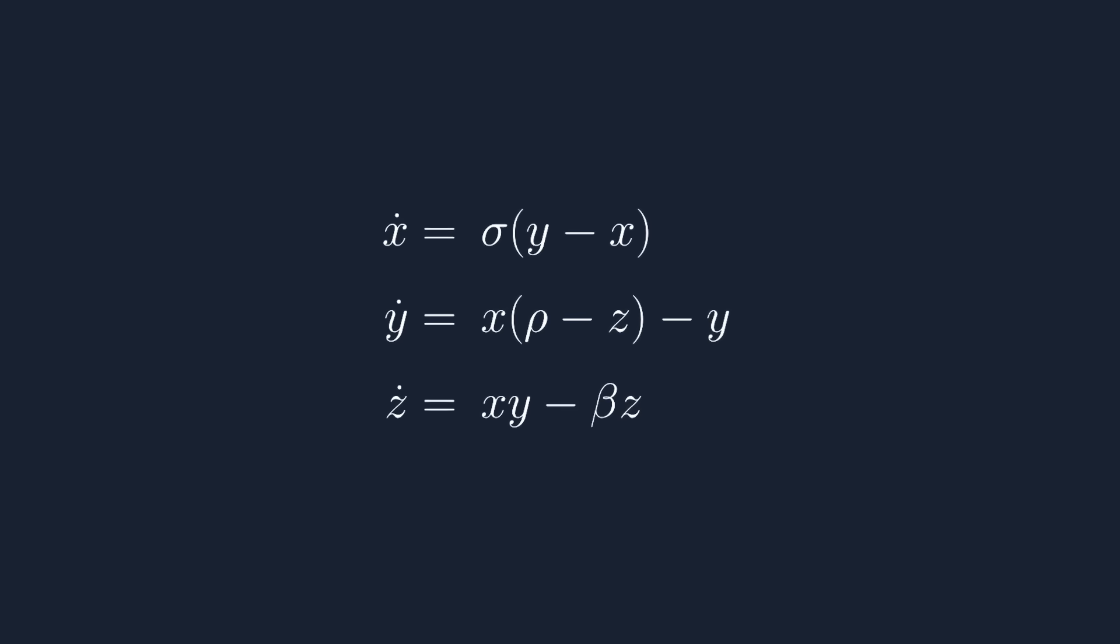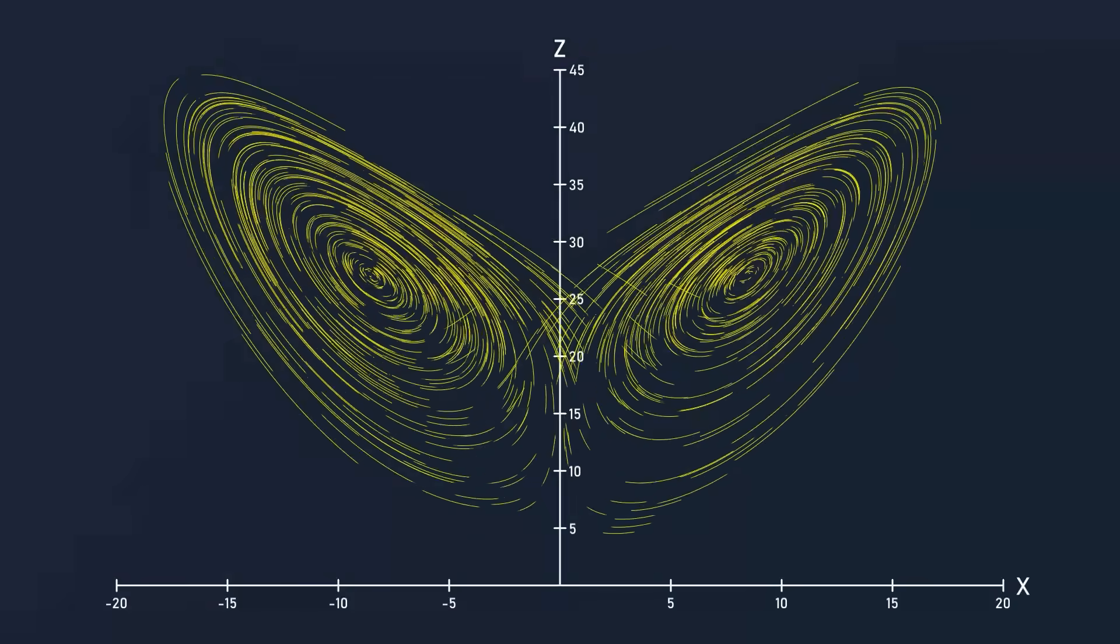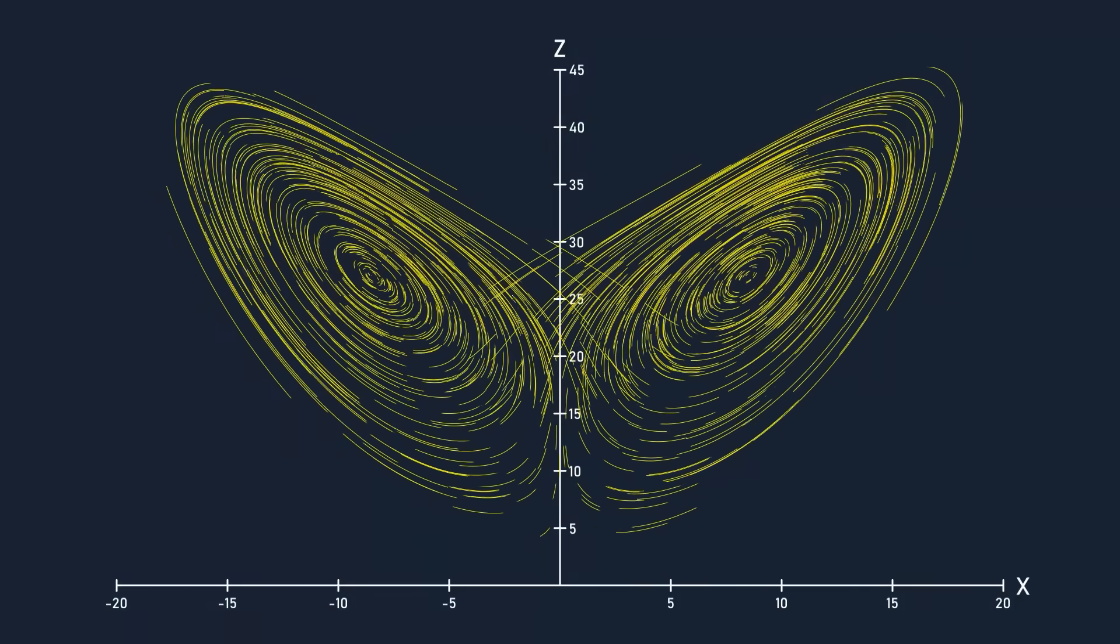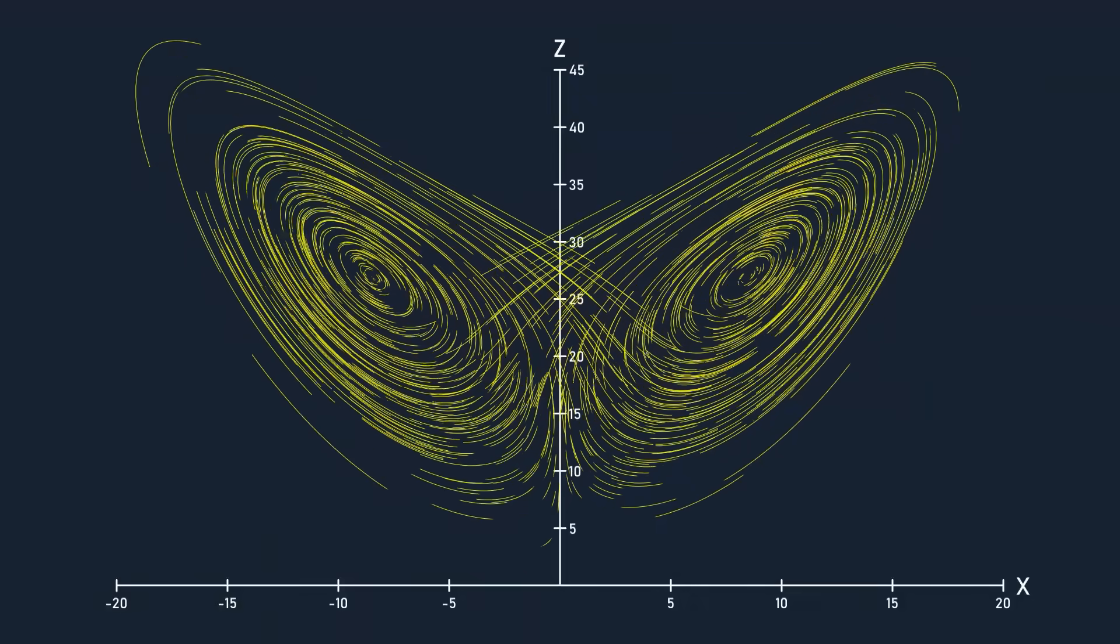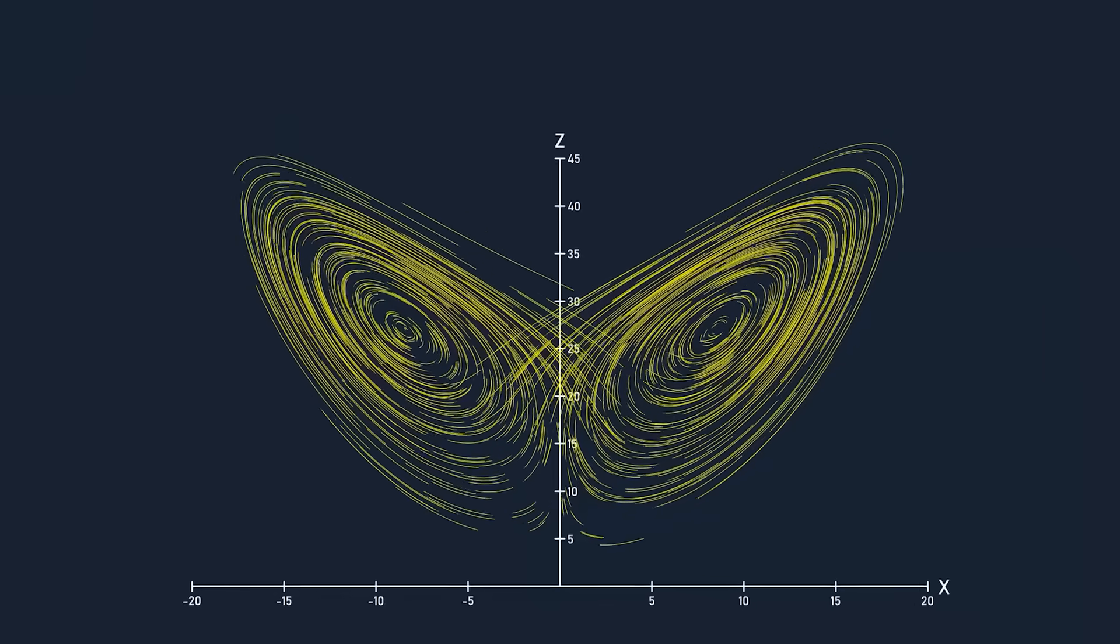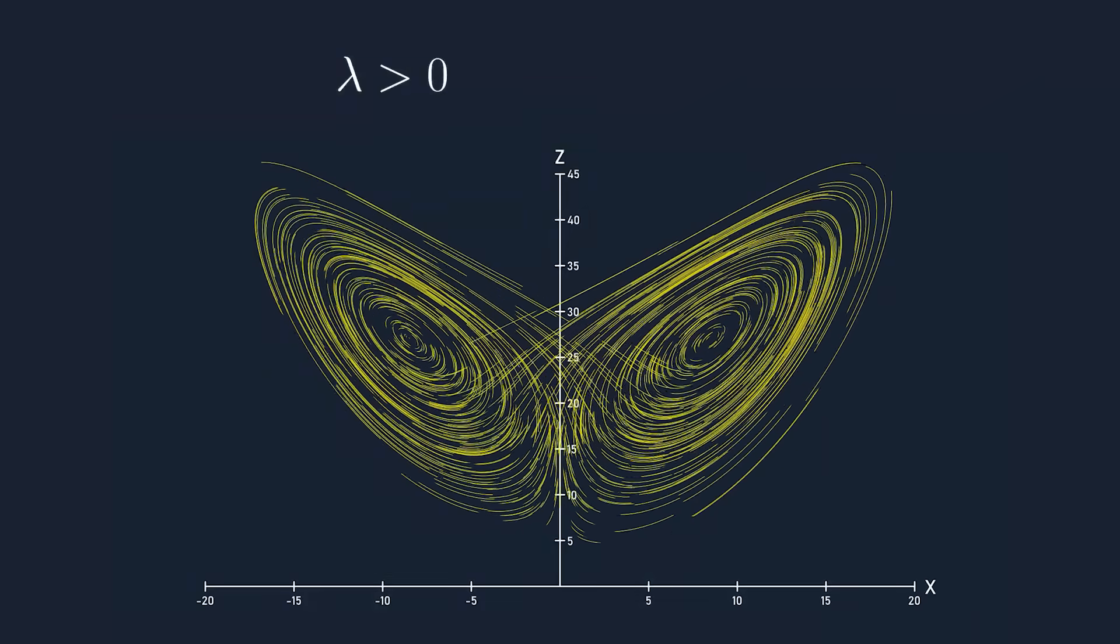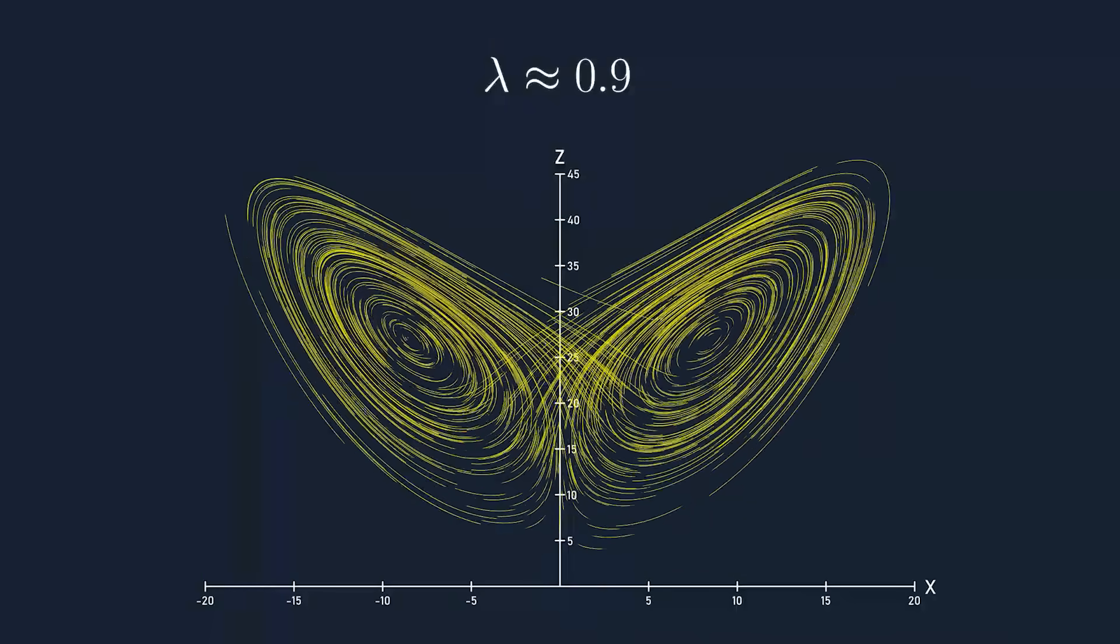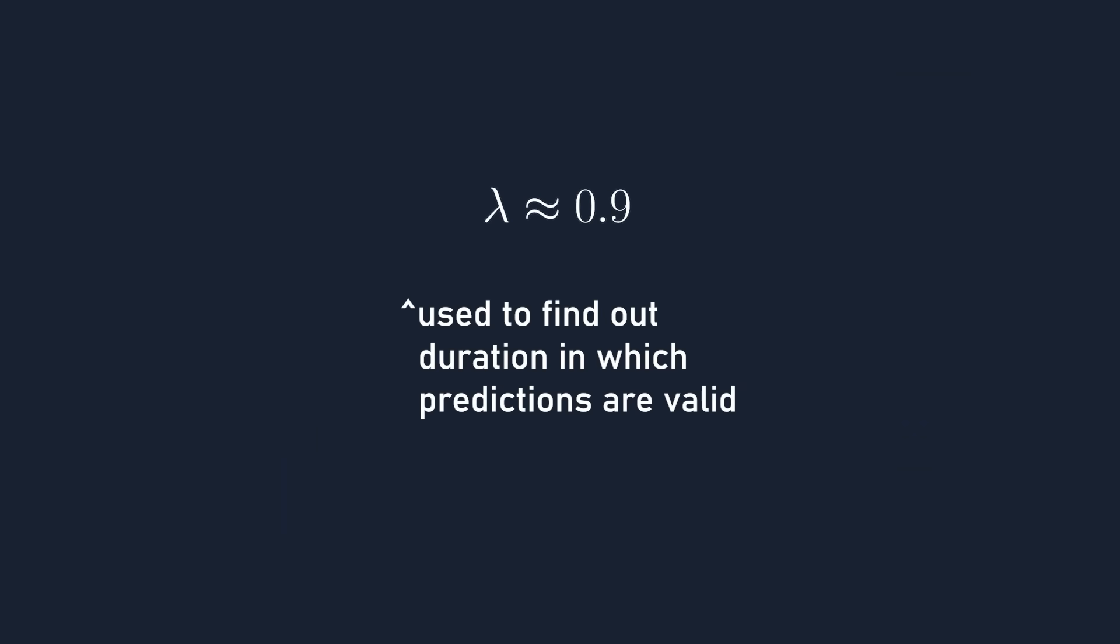There isn't a way to find the Lyapunov exponent by just looking at the equations. It is measured by actually running the simulation, keeping track of many pairs of trajectories, and finding the average rate of change in their distance. But it provides a simple metric to communicate how chaotic a system is. As long as the Lyapunov exponent is larger than 0, the attractor will be chaotic, and it's equal to about 0.9 for the Lorenz attractor. That's how we can figure out the duration of time in which predictions are valid, otherwise known as the predictability horizon.